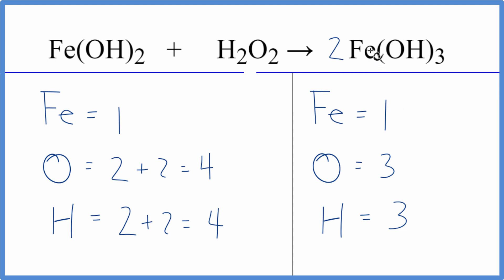We have 1 times 2, that's for the iron, and then we have 3 times the 1 times the 2. So that gives us 6 oxygens. Hydrogens, 3 times 1, that's 3 of them, times the 2. That gives us 6.